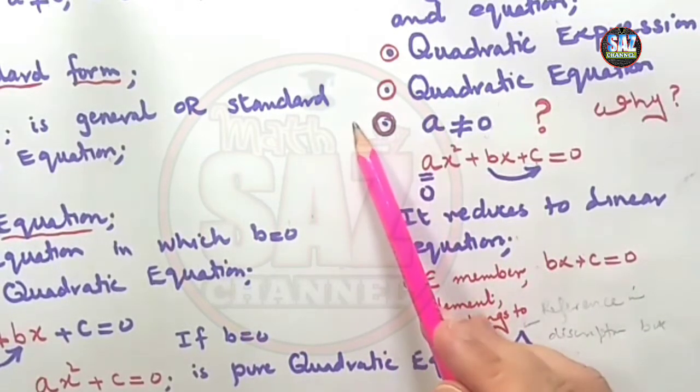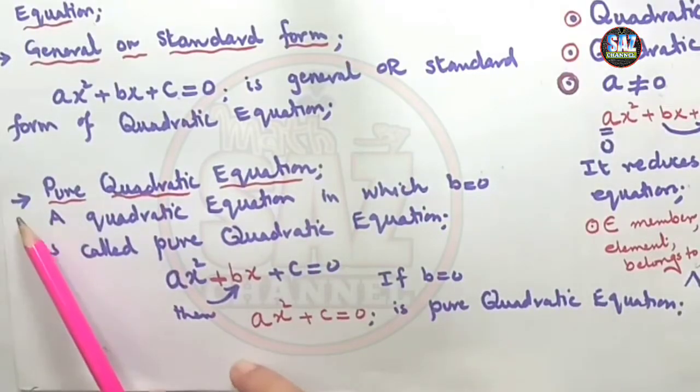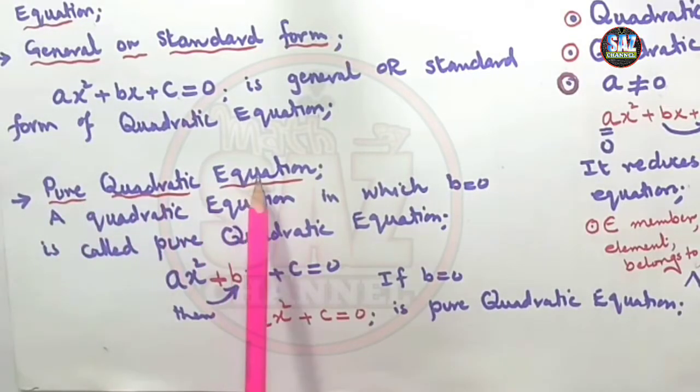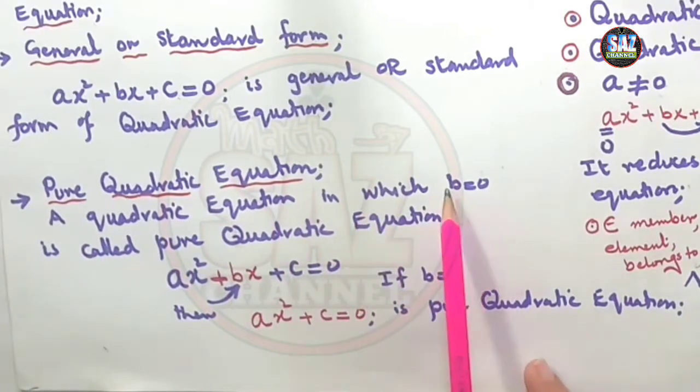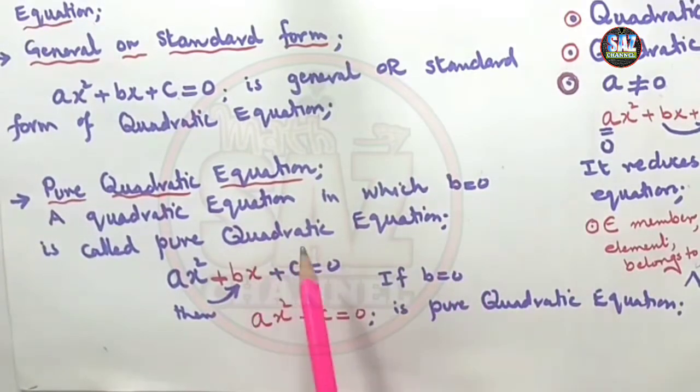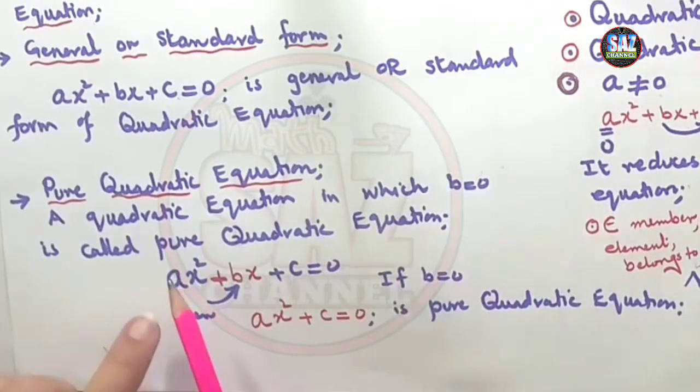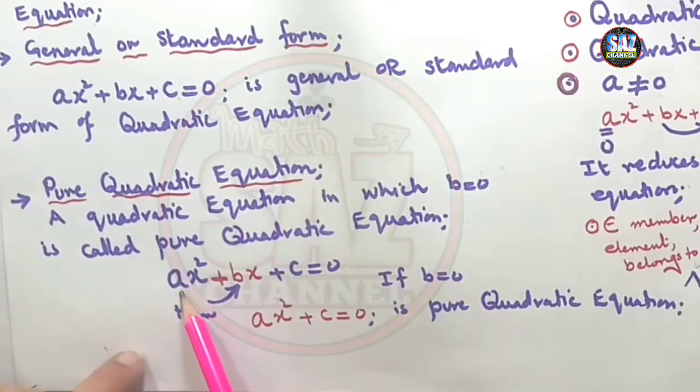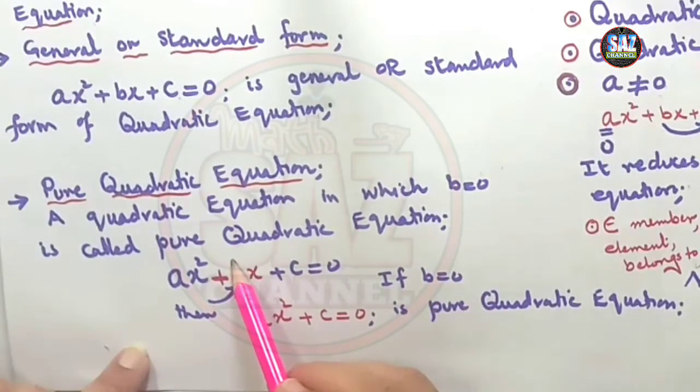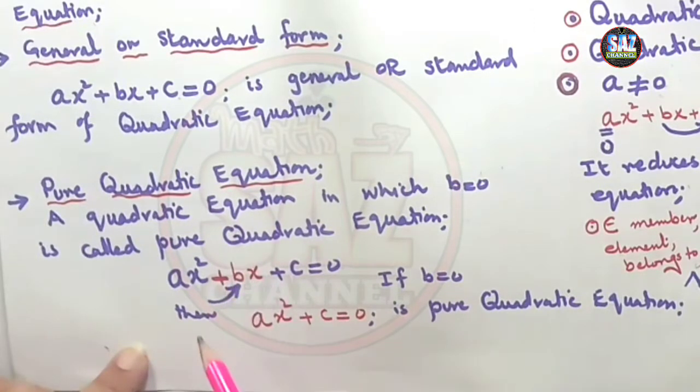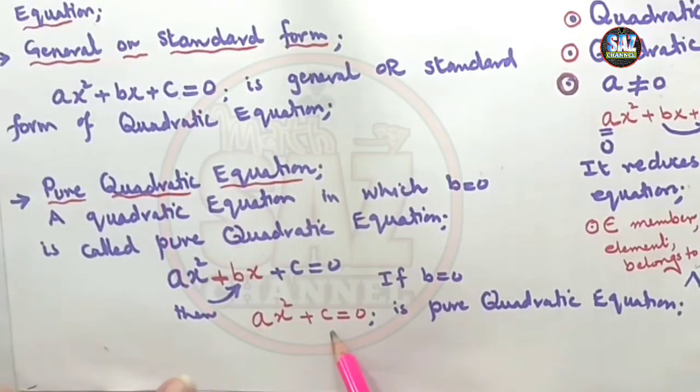So it's really important to understand. Then the next point that we have to understand is pure quadratic equation. An equation in which b=0 is called the pure quadratic equation. If we have the quadratic equation ax²+bx+c=0, and I'm making b=0, this whole term will vanish and I will be left with ax²+c, which is the pure quadratic equation.